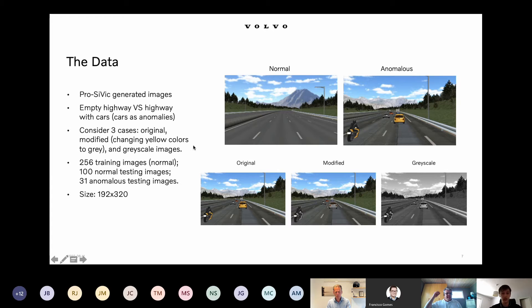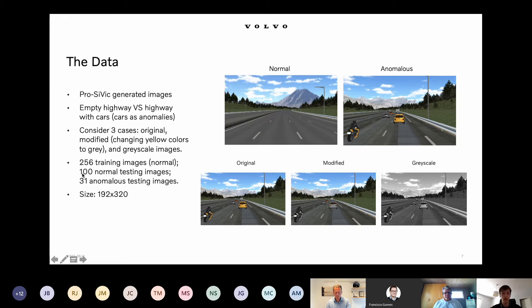We consider three different scenarios: original images with all colors; a modified version where we change all bright yellow colors in the images to gray, to see how it influences anomaly detection results; and a case where we remove color information completely, transforming images to grayscale. We had 256 training images for training our autoencoder model, and 100 normal and 31 anomalous images for testing.